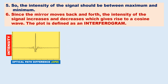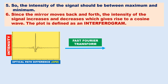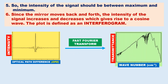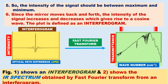This interferogram is converted into the IR spectrum upon applying the fast Fourier transform. This is the interferogram obtained from the Michelson interferometer, and this is the IR spectrum obtained by fast Fourier transform of the interferogram.